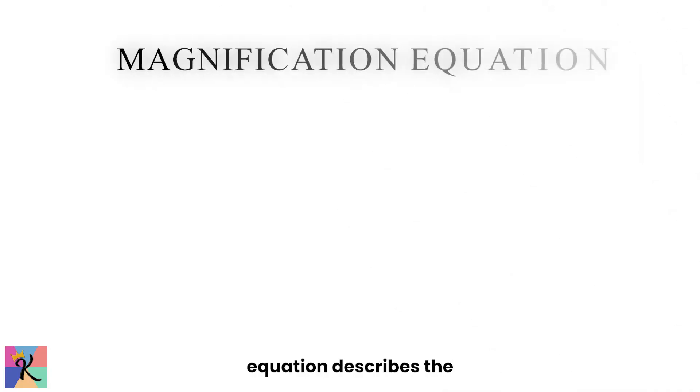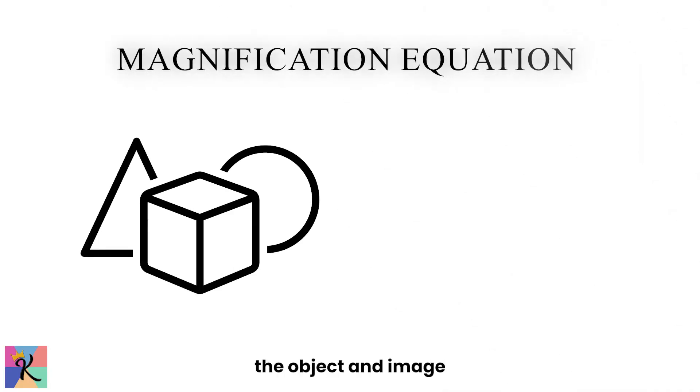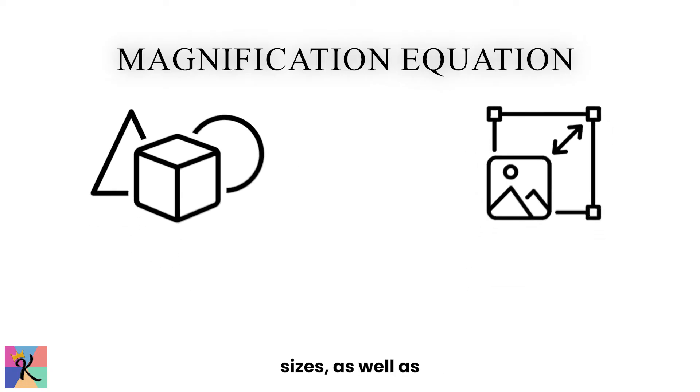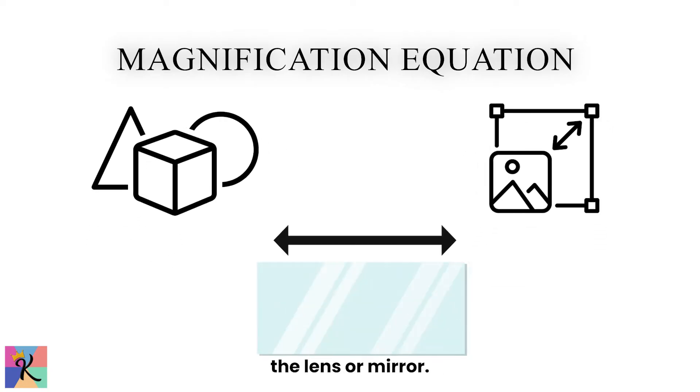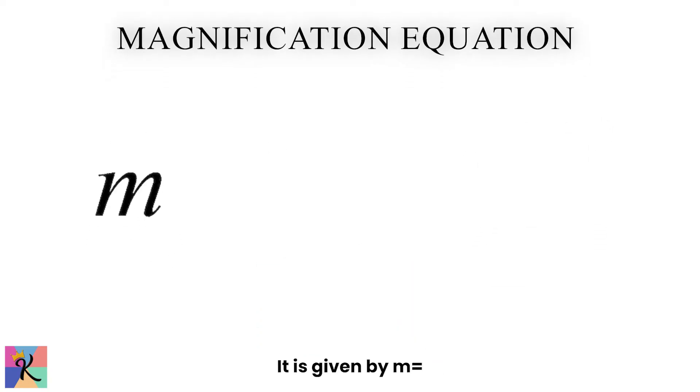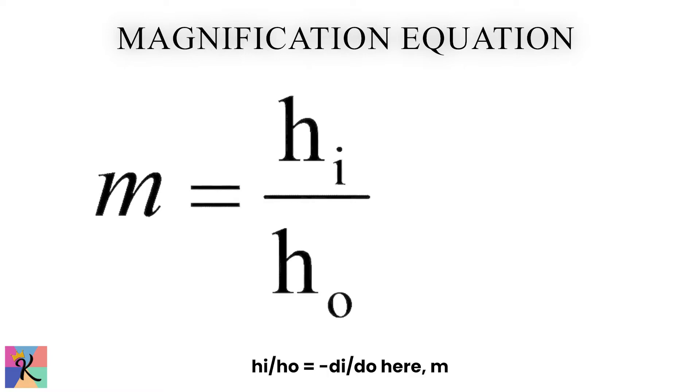The magnification equation describes the relationship between the object and image sizes, as well as their distances from the lens or mirror. It is given by M equals HI over HO, which equals negative DI over DO.